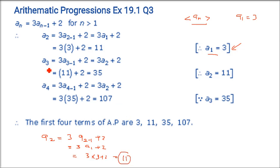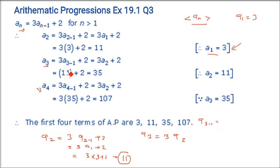Now a₃ = 3·a₂ + 2. a₂ = 11, so a₃ = 3(11) + 2 = 33 + 2 = 35. Before finding a₄, you must have a₃. So a₄ = 3·a₃ + 2 = 3(35) + 2 = 107.